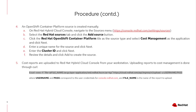Step 5: Once the source is manually created, cost reports can be uploaded to the Red Hat console from your workstation using the curl command given here. In this command, the username and password correspond to the user credentials for console.redhat.com, and the file name is the name of the report to upload.